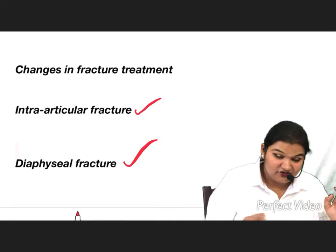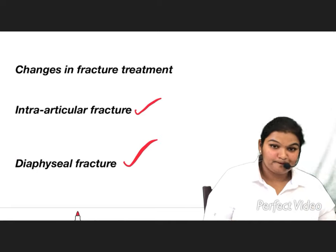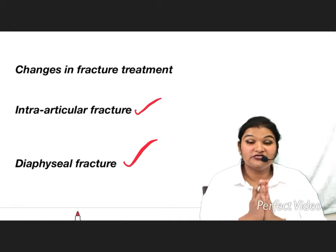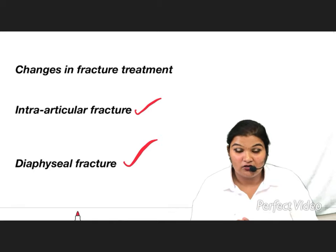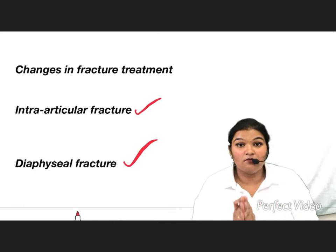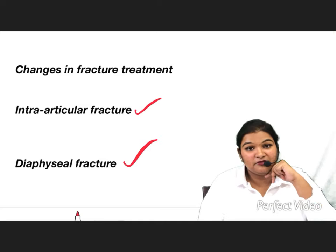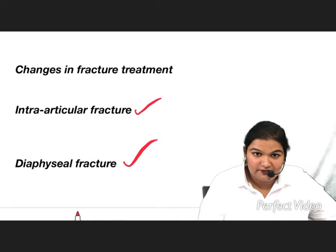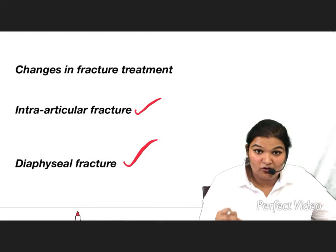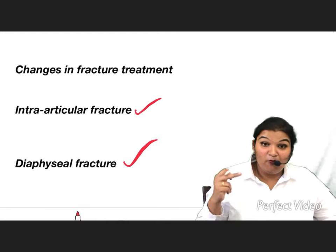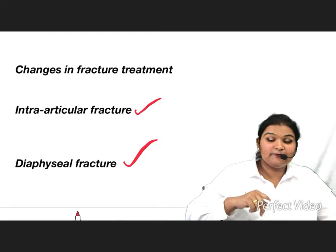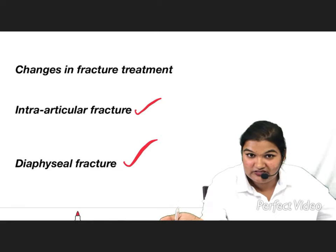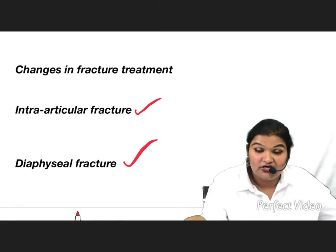For diaphyseal fractures — fractures of the shaft — you need to reduce and fix it, but while reducing you have to check alignment. If one limb is shorter than the other, it is not cosmetically acceptable. You must ensure proper alignment and mobilize the limb as soon as possible to prevent muscle wasting.